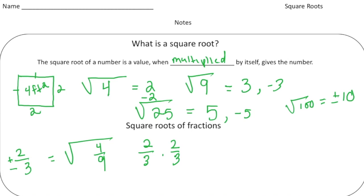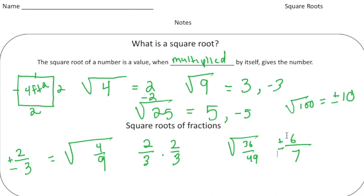Another example: what's the square root of 36/49? I know 36 is six times six, and 49 is seven times seven, so six-sevenths times six-sevenths gives us 36/49. The answer is going to be plus or minus six-sevenths.